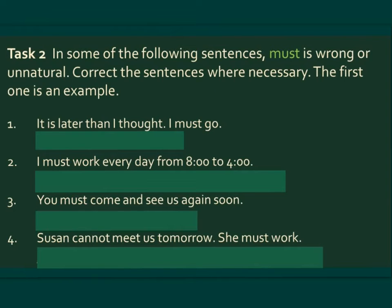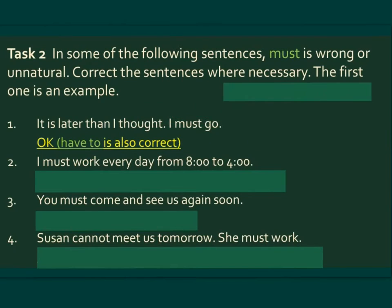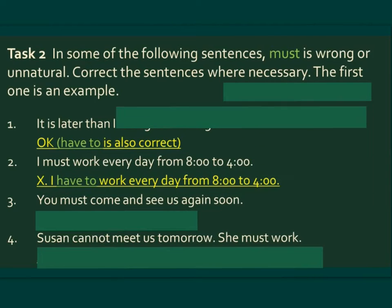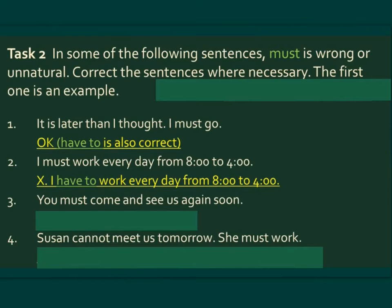Task two: in some of the following sentences, must is wrong or unnatural — correct the sentences where necessary. The first one is an example: It is later than I thought, I must go — this is correct. Note that have to is also correct. Number two: I must work every day from eight to four — this is incorrect. The correct version is: I have to work every day from eight to four.